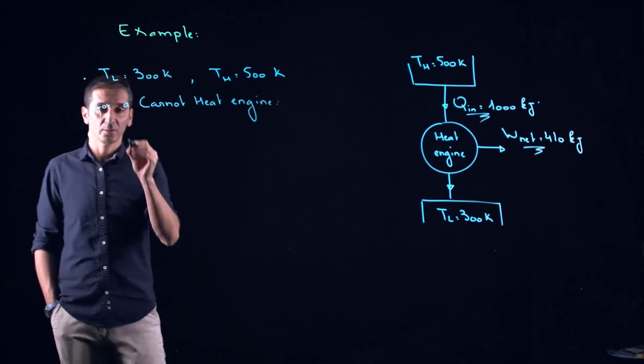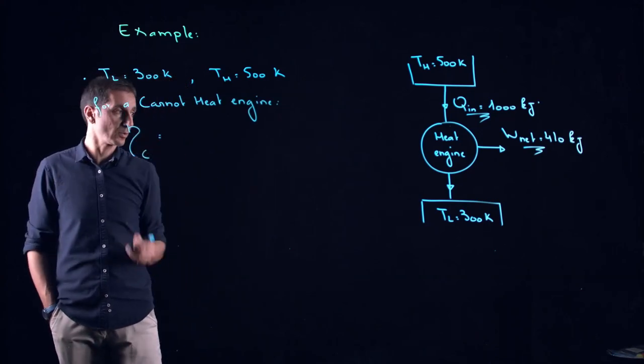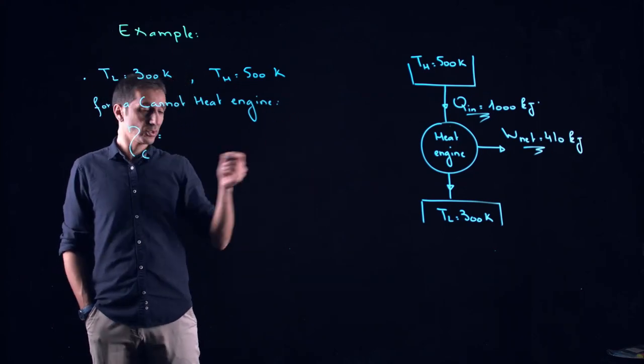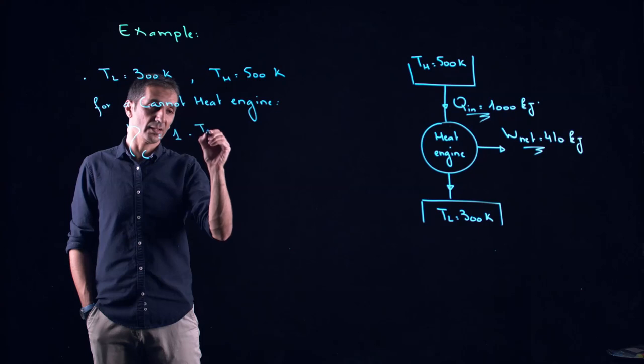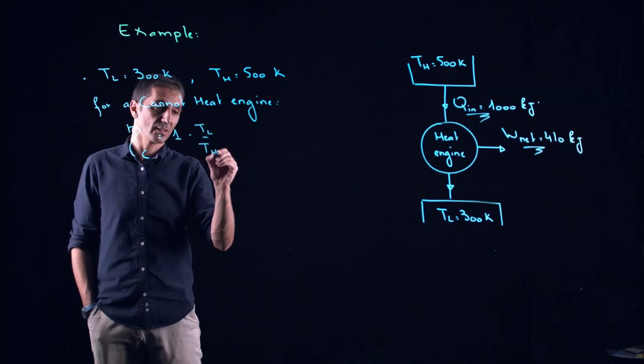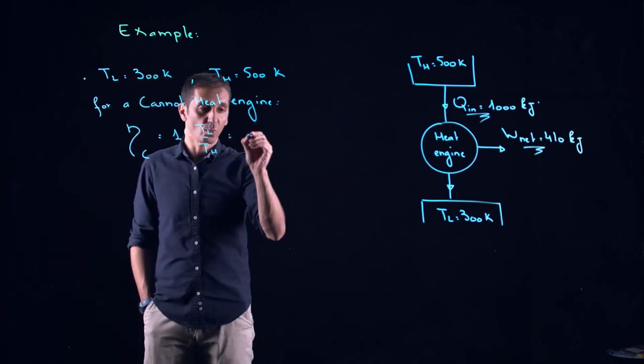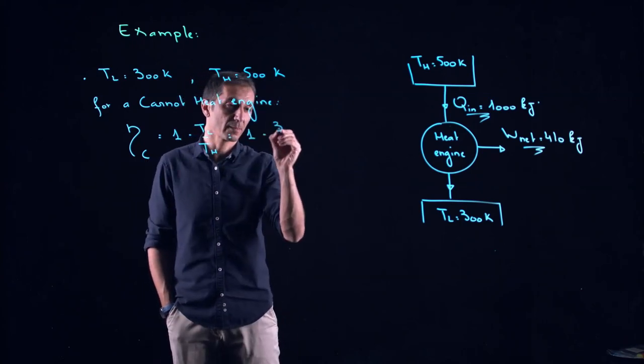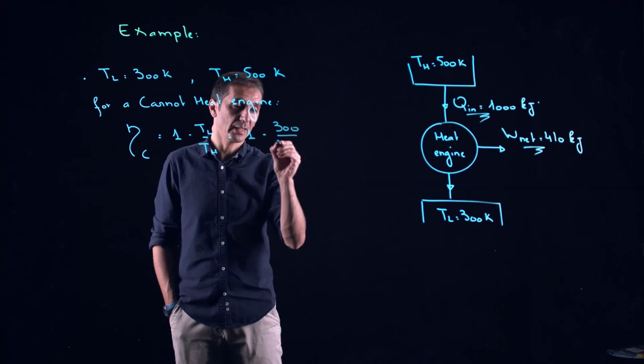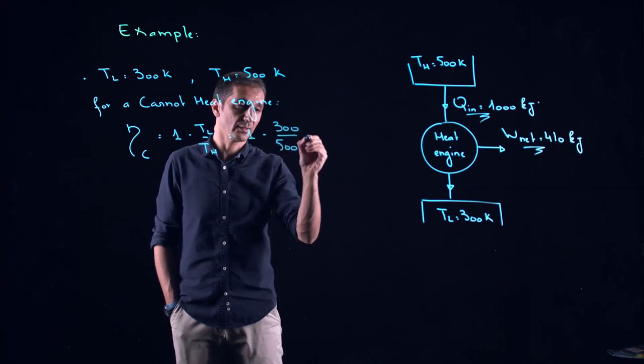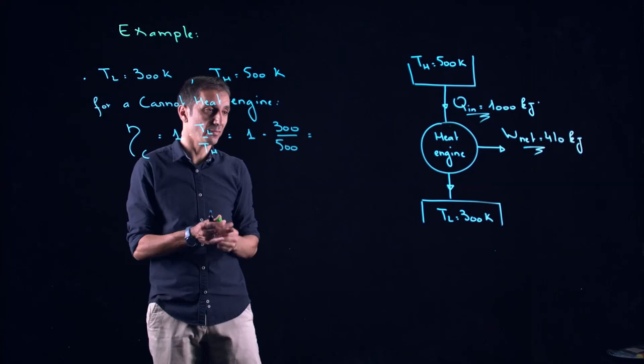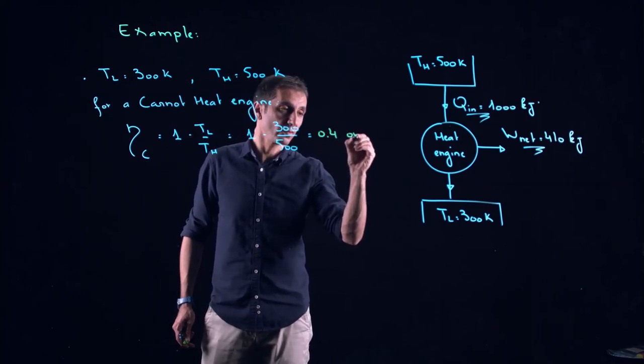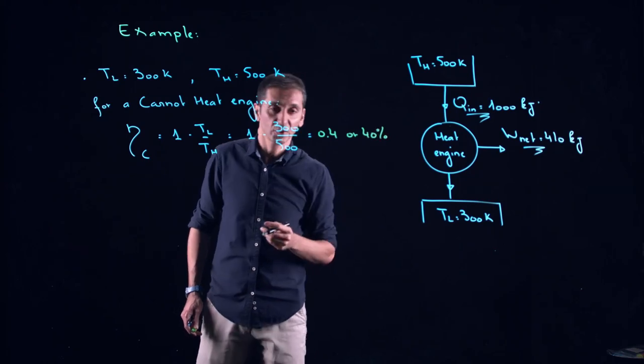I'm expecting to get efficiency of a Carnot cycle running between the two temperature reservoirs. One minus TL over TH. This is equal to one minus, my TL is 300 Kelvin, and my TH is 500 Kelvin. And this will give me an efficiency of 0.4 or 40 percent efficiency.